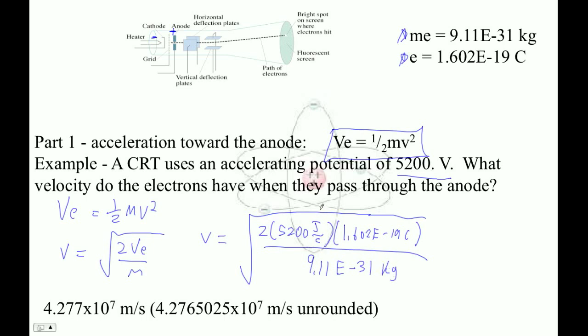2 times 5,200 times 1.602, divided by that. I'm getting that it's equal to 4.2765025668. So, let's see. 1, 2, 3, 4, 5, 6, 7. There we go.